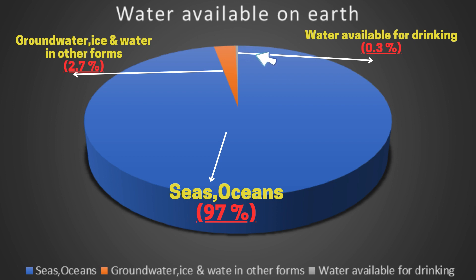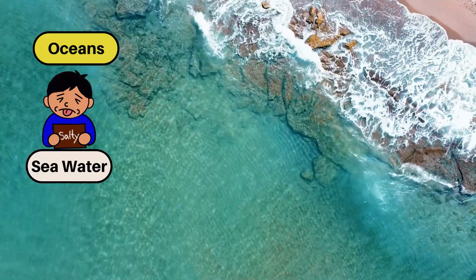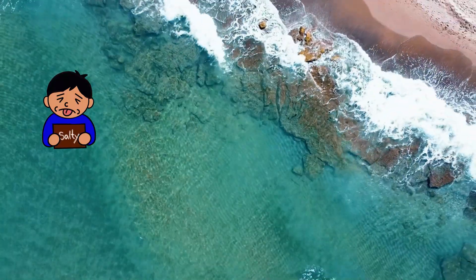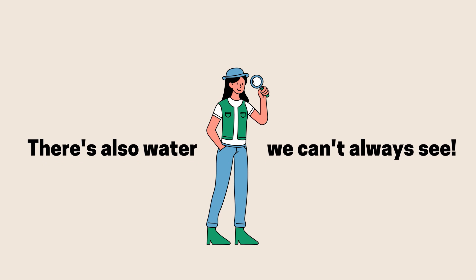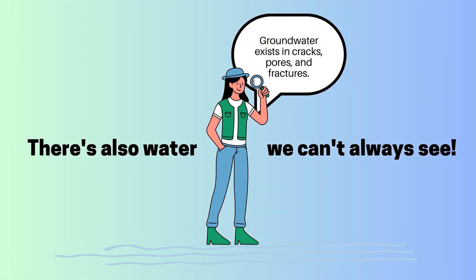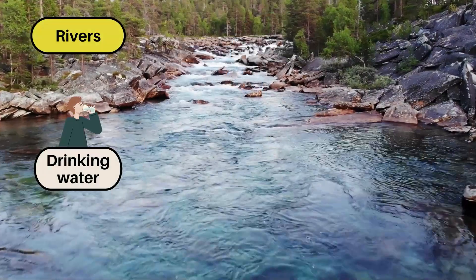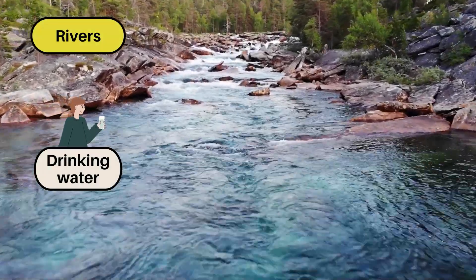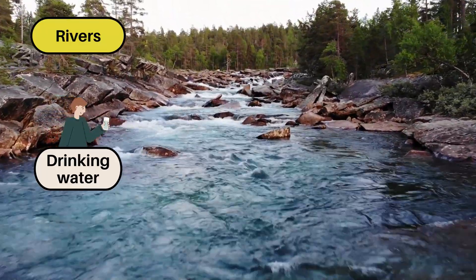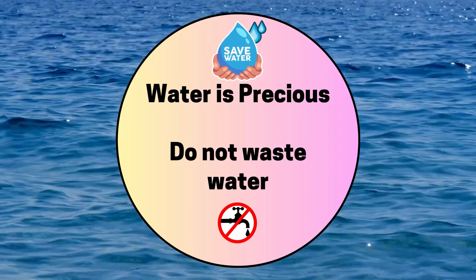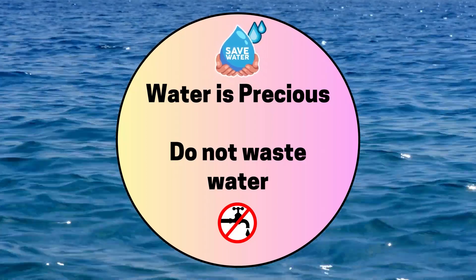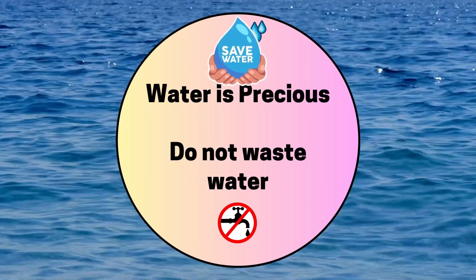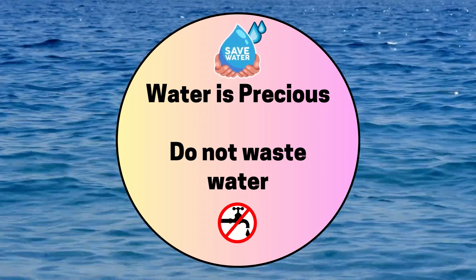We cannot use all the water on earth because sea water is salty. There is also water we can't always see, like groundwater that exists in cracks, pores and fractures. Also, some water is in a frozen state. A very small quantity of water is available for drinking, yet it is enough for all living things. Water is very precious — it is said that water is life. It is almost impossible to spend even a single day without water. So friends, do not waste water, save water.